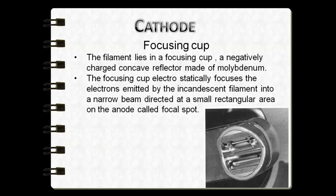Next, we have the focusing cup. The material of choice is molybdenum. It is a negatively charged concave reflector cup of molybdenum that houses the filament. The focusing cup electrostatically focuses the electrons emitted by the incandescent filament into a narrow beam directed towards a rectangular area in the anode called the focal spot, facilitating the movement of the electron cloud towards the target.